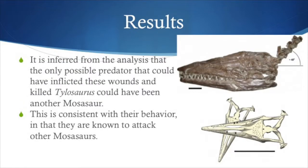From this analysis, the scientists inferred that the only possible predator that could have inflicted the wounds found on the fossil would be another, larger Mosasaur. This finding is consistent with the known hunting behavior of Mosasaurs, in that they often attacked other members of their species. You can observe the angle of the neck of the found Mosasaur fossil, which suggests the blunt trauma experienced by the victim in the fatal attack. In the picture below, you can observe the assumed angle of attack that would cause such damage to the specimen.